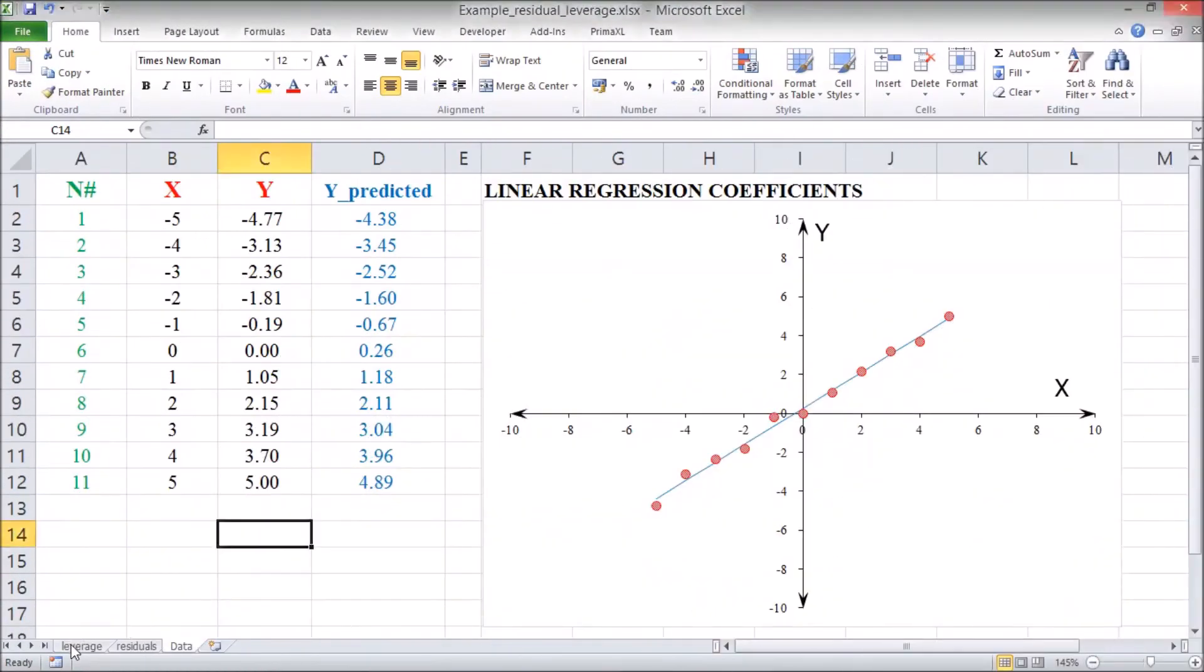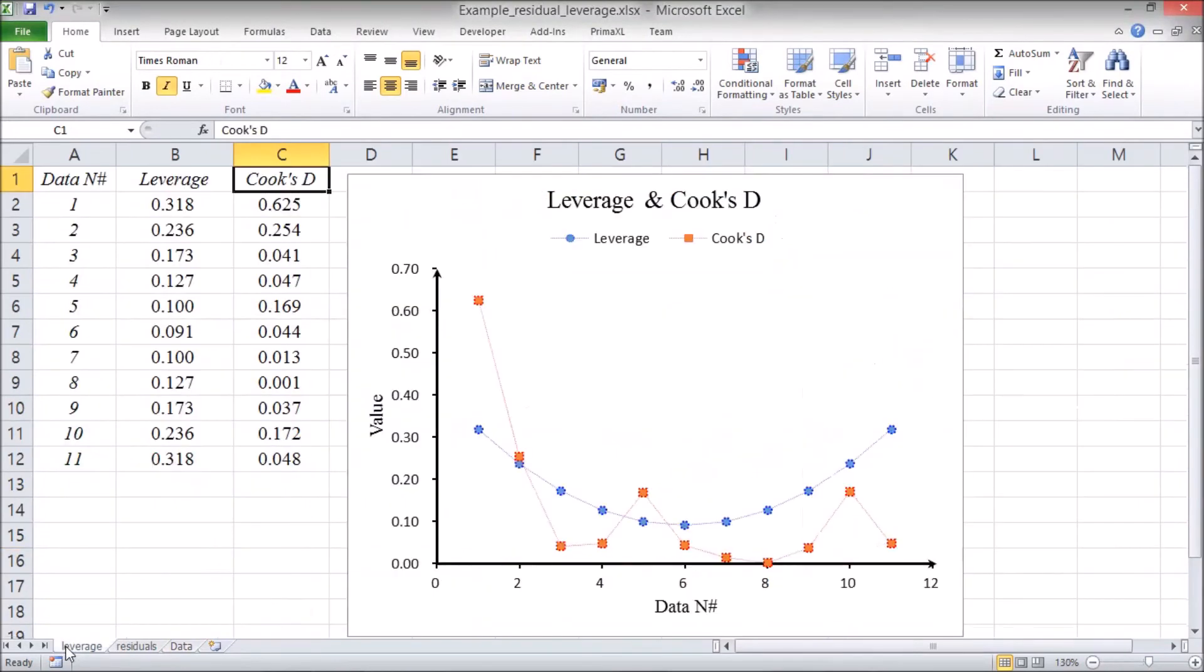Let's move to the sheet named Leverage. We can notice that the Leverage gets larger as we move away from the center of x. Also, we can see the Cook's distance.